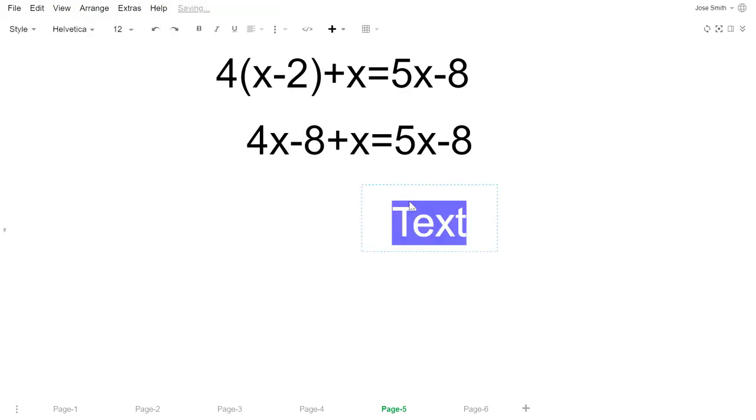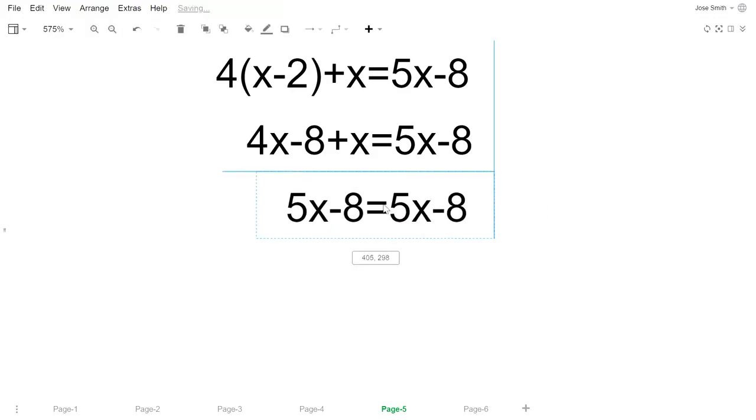4x plus x would give you 5x, the minus 8 is still there equals 5x minus 8. So you already see here what we have: we got 5x minus 8 equals 5x minus 8. We got both the equations the same on both sides.